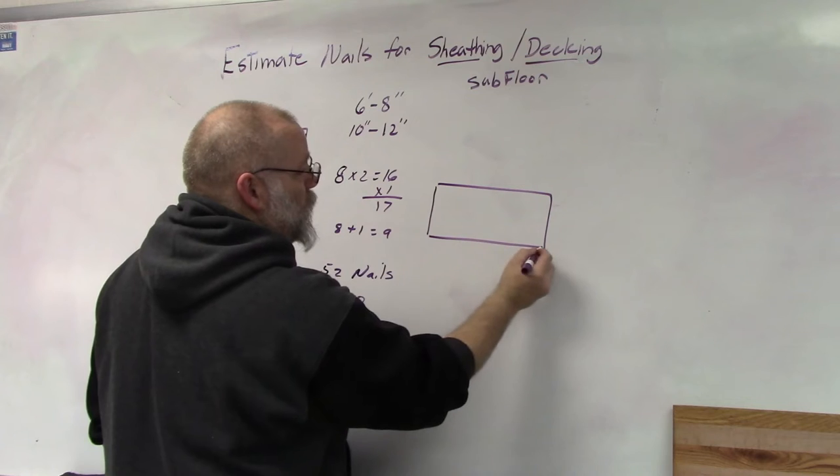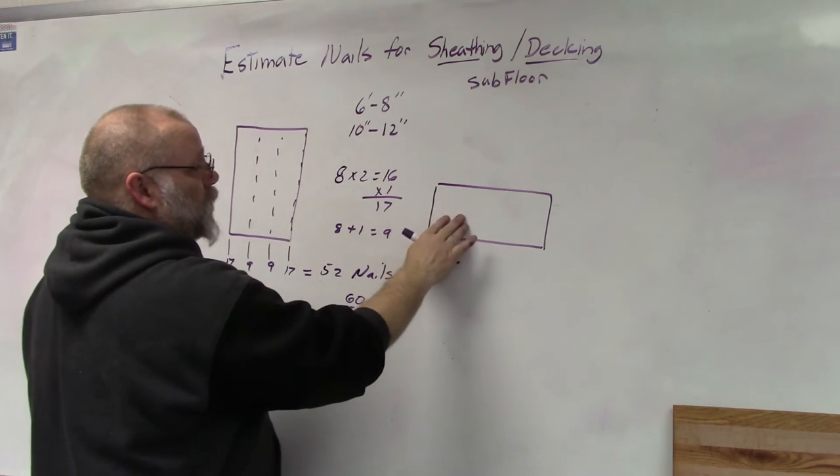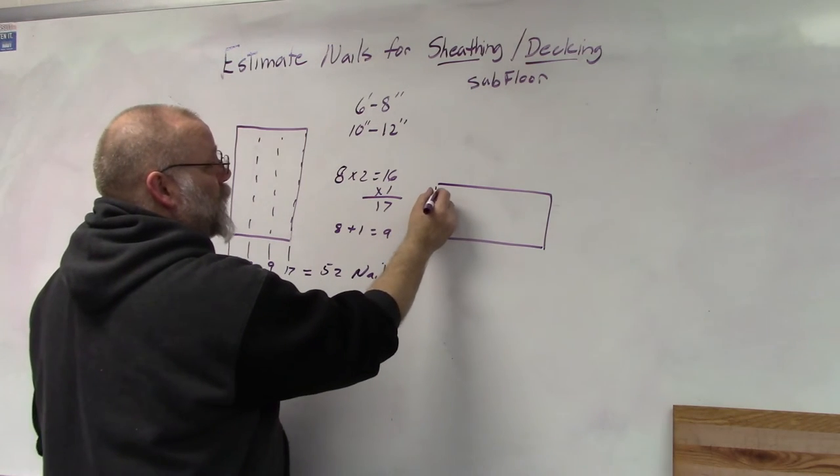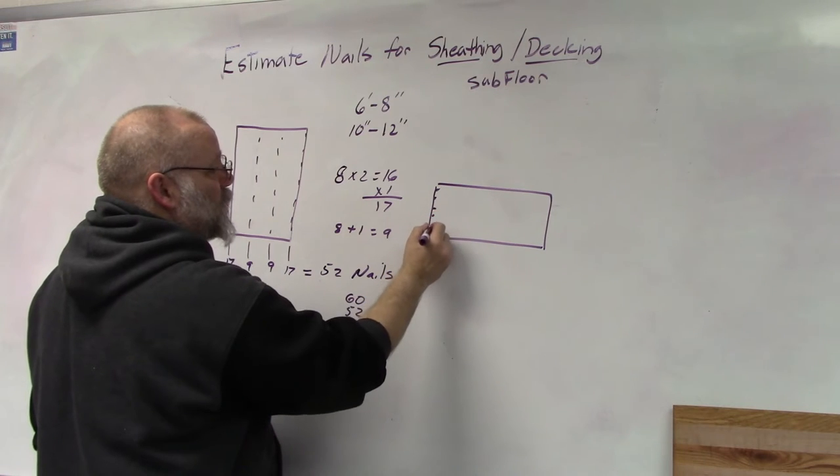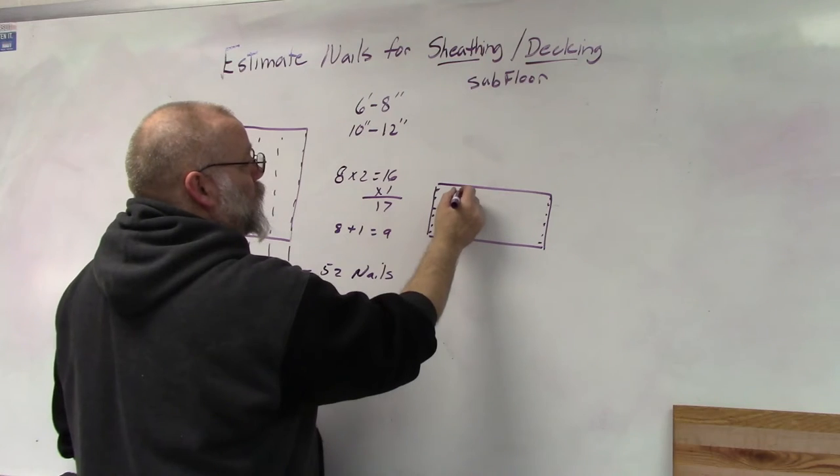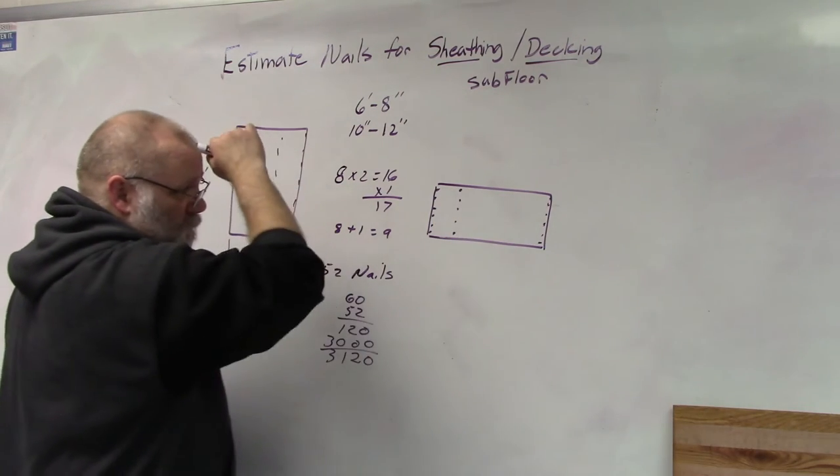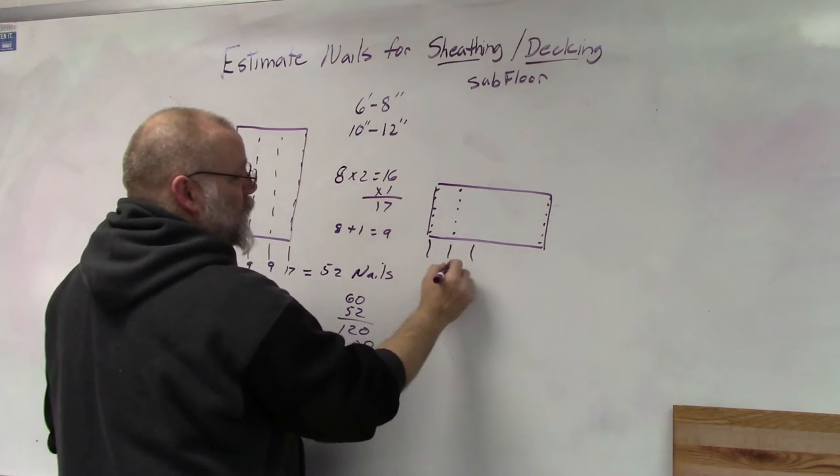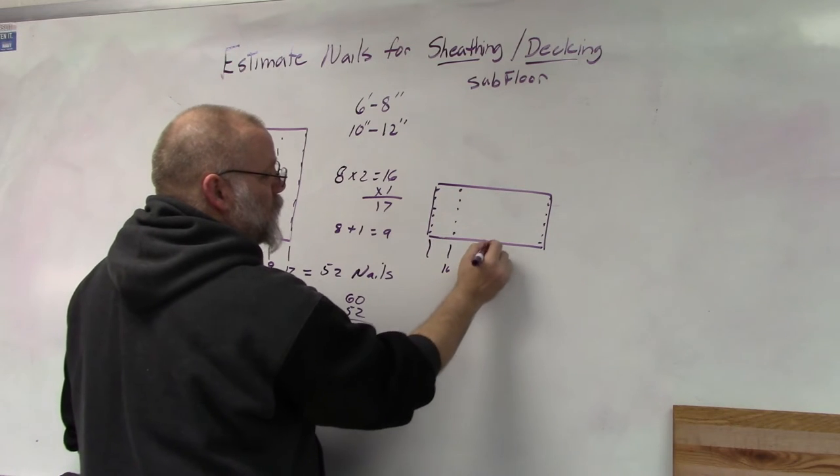Whether you put it that way or you put it this way, like on your decking where you lay the sheets this way, again it's six inches along this edge, six inches along this edge, and then a little bit wider apart there.